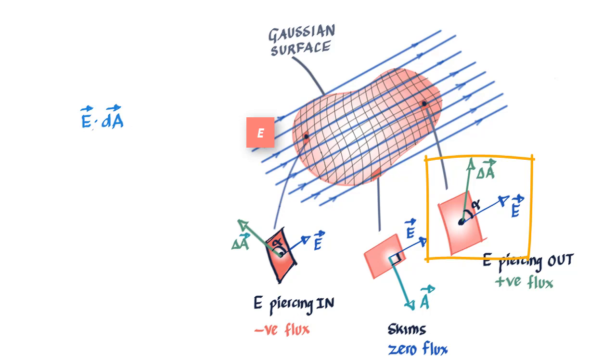If we add up the flux value for all such dA areas across the surface, we can find the total flux through the surface. We know it is impossible to do this without using integral calculus, and so we do E dot dA for each small area and simply integrate it over the area to get the net flux.